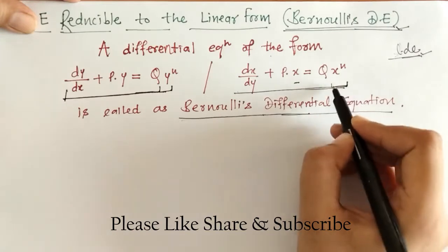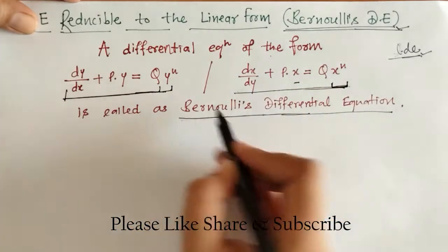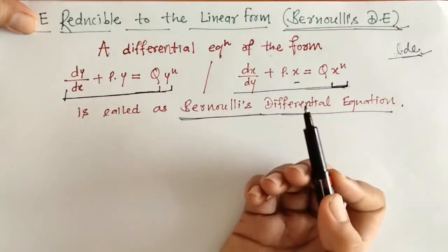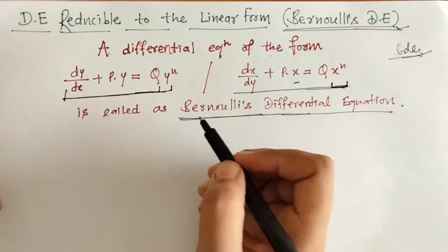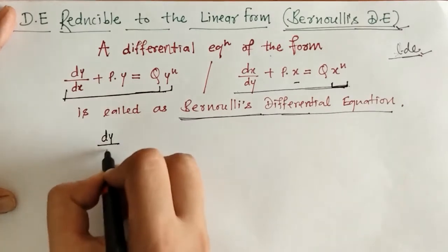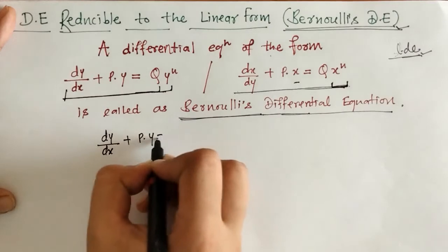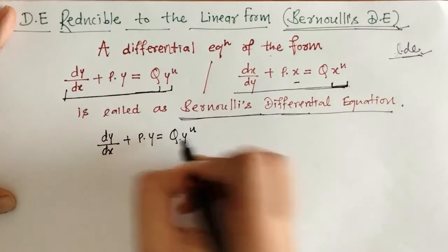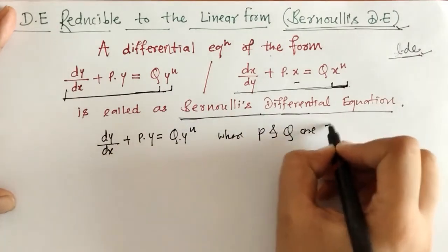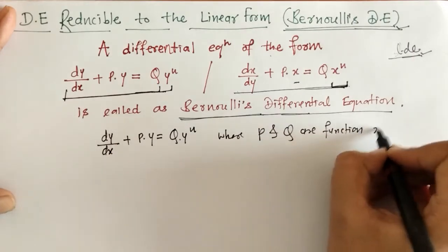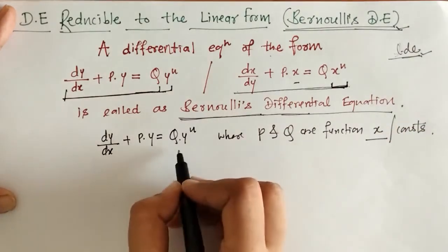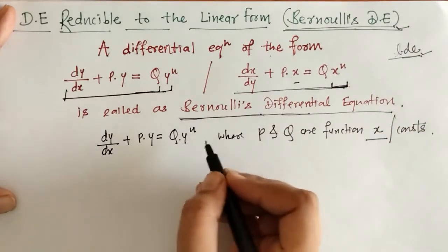Here we have this x raised to n as an extra term. Such differential equations are reducible to the linear differential equation so that we can find their solution. Now we will discuss this first form. Here we can write dy/dx plus Py equals Q·y raised to n, where P and Q are functions of x, or they may be constants.